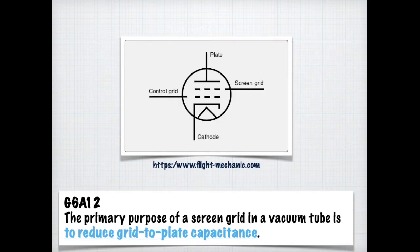And on the exam, they want you to know what the purpose of a screen grid is in a vacuum tube. And the primary purpose of a screen grid in a vacuum tube is to reduce the grid to plate capacitance.